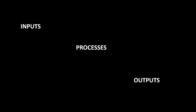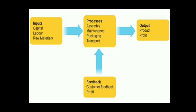In an industrial system, the things which are involved are inputs, processes, and outputs. Let's learn about each one. Inputs in an industry include money, labor, and raw materials. You need a huge amount of money to set up an industry — to buy machines, buy raw materials, and pay the workers. You also need laborers who work in the industry to make the finished products, and raw materials are essential to produce those finished goods.